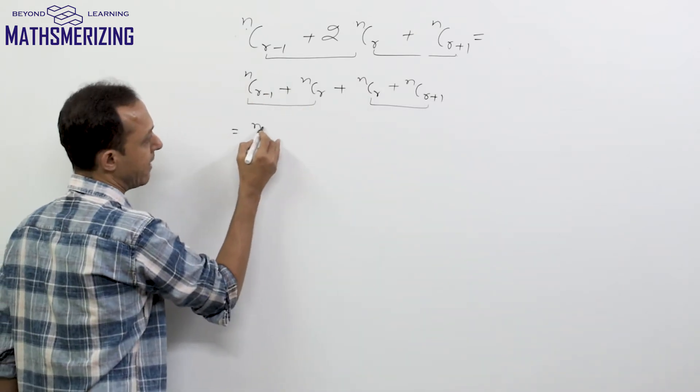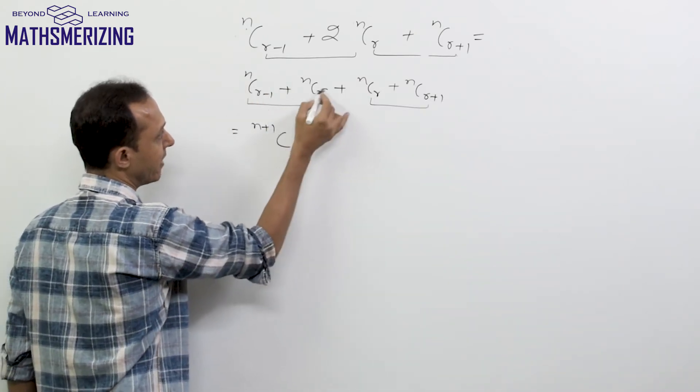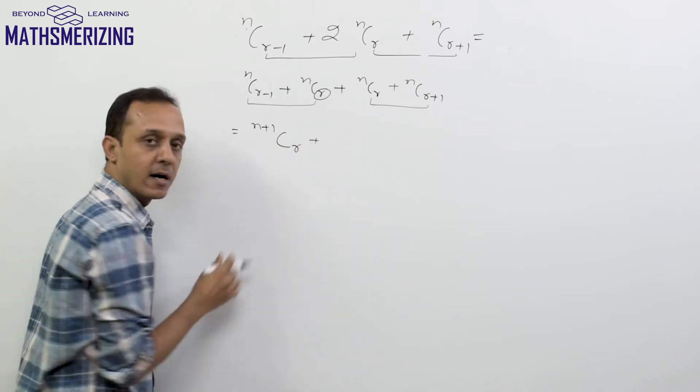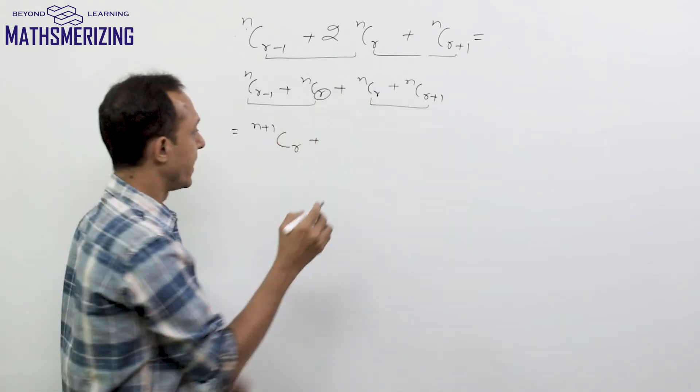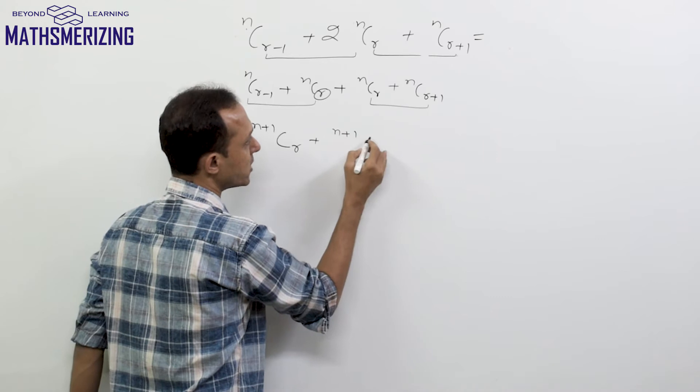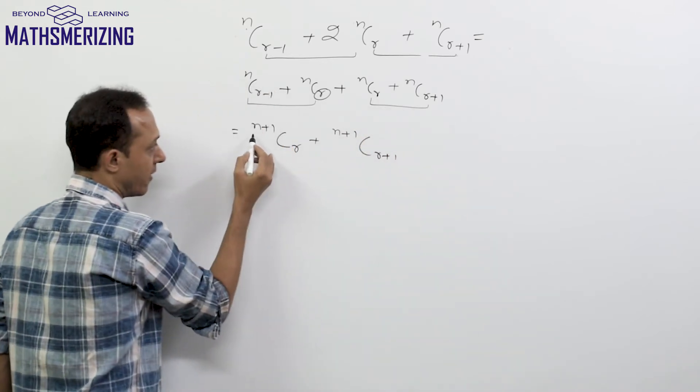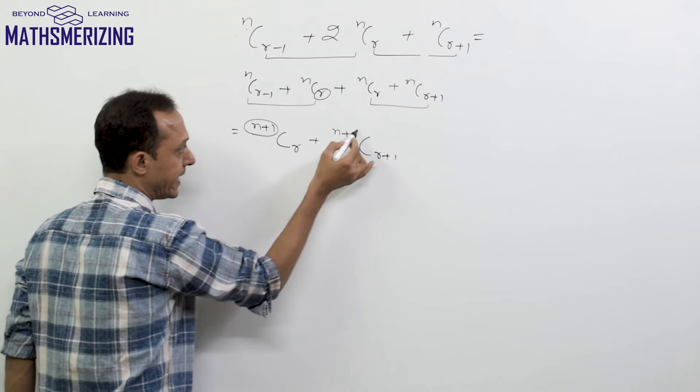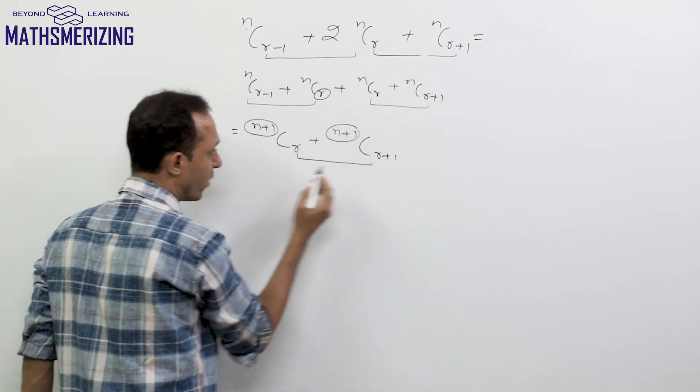Here I can write it as n+1 and the higher value is r. So this is n+1Cr. Now what about this one? Again it'll be n+1 and then higher value is r+1. If I look at it again, this is n same and then r again differs by 1.